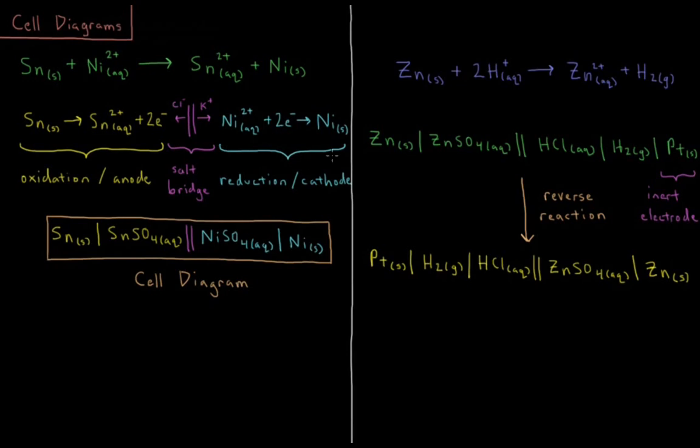On the other side, we have the reduction half cell reaction, which occurs at the cathode on the right in our diagram. We have aqueous nickel 2+ cations, plus two electrons which came from our anode, reacting to form solid nickel metal.